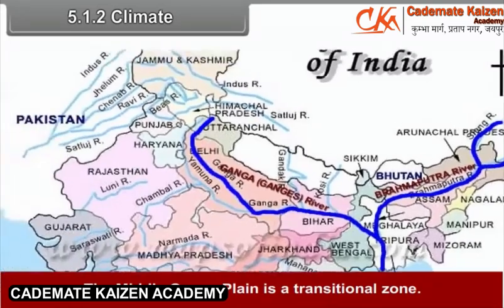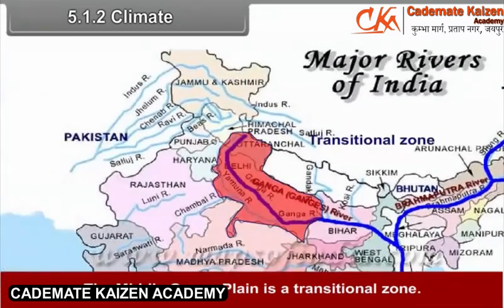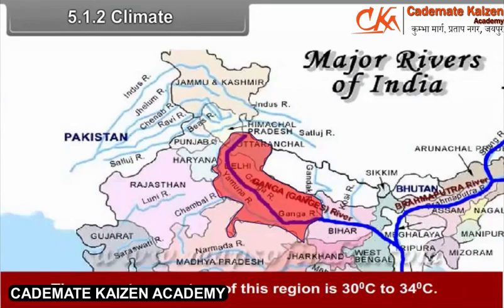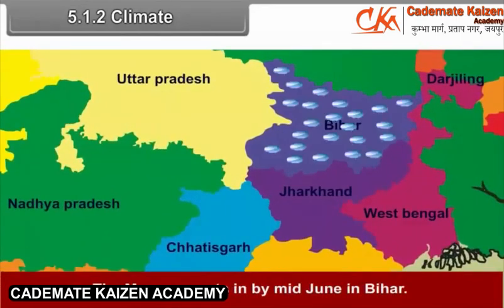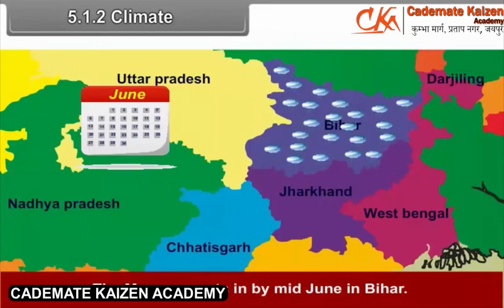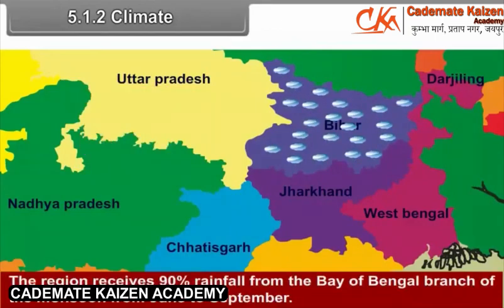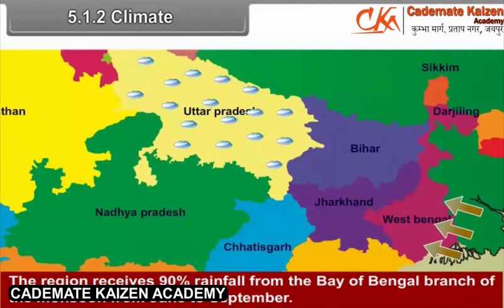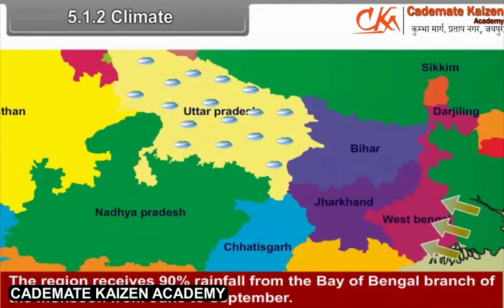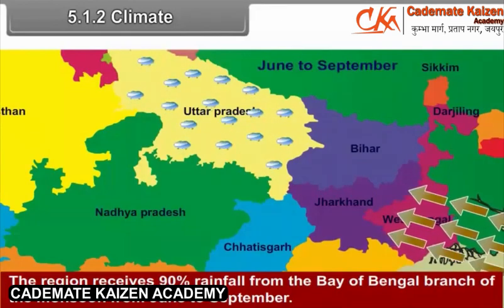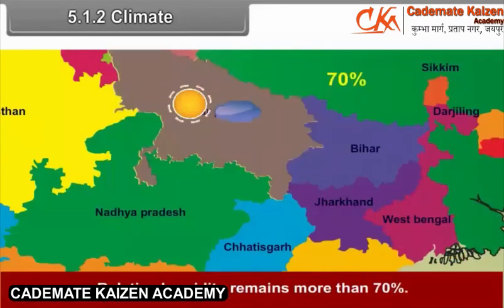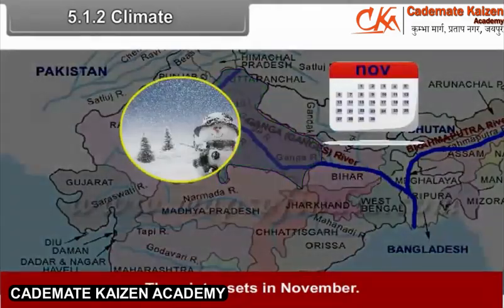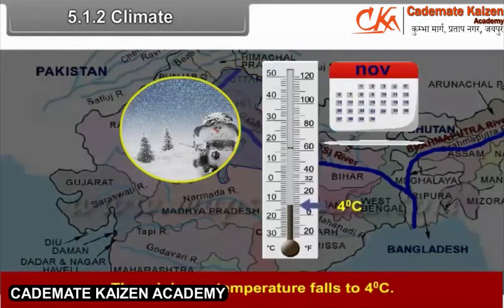The middle Ganga Plain is a transitional zone. The mean temperature of this region is 30 to 34 degrees Celsius. The monsoon sets in by mid-June in Bihar. The region receives 90% of rainfall from the Bay of Bengal branch of the monsoon from June to September. Relative humidity remains more than 70%. Winter sets in November and the minimum temperature falls to 4 degrees Celsius.